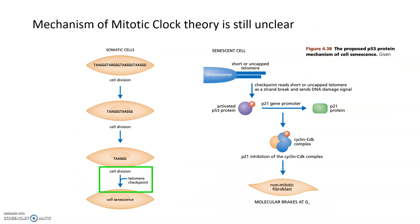What that telomere checkpoint is — and what the ultimate threshold for stopping cell division and entering into arrest or senescence is — is not known. There is a proposed mechanism to this telomere checkpoint. The proposed mechanism, as we currently understand it, involves p53, which is a tumor suppressor gene. The current proposed mechanism is that a short telomere seems to be read the same way as a DNA double-stranded break. This checkpoint senses a short telomere as a strand break and basically sends a DNA damage signal triggering this p53 pathway.